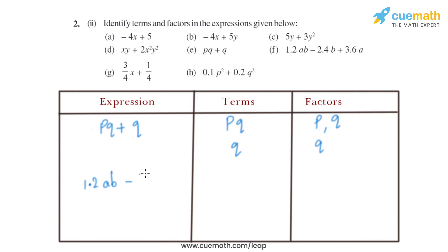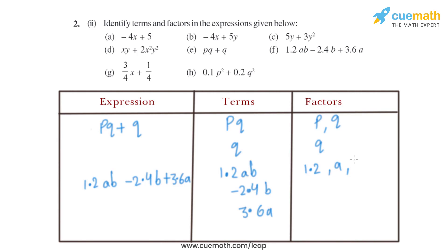Now let's move on to part F. The expression given is 1.2AB minus 2.4B plus 3.6A. The terms involved are 1.2AB, minus 2.4B, and 3.6A. The factors of 1.2AB will be 1.2, A, and B. The factors of minus 2.4B will be minus 2.4 and B. Similarly, for 3.6A, the factors will be 3.6 and A.